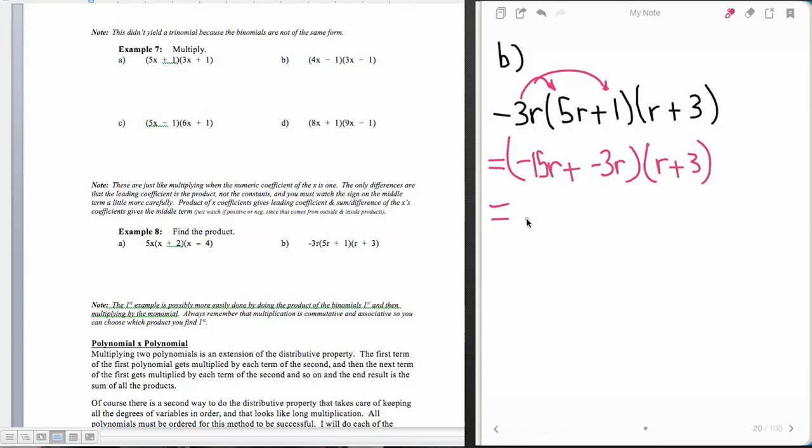So we have now a binomial times a binomial. So negative 15r times r which gives me a negative 15r squared. And then my outsides, negative 45r, and then my insides, negative 3r squared, and then my last which gives me a negative 9r. And so now we see that we have, oops I forgot the r squared here and this one's an r cubed therefore. That would have been bad.